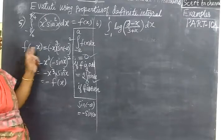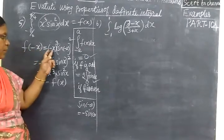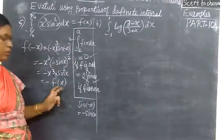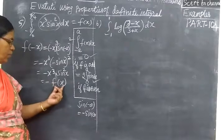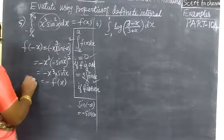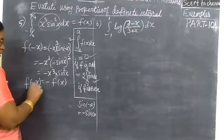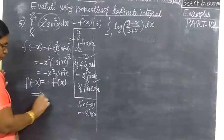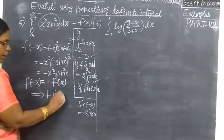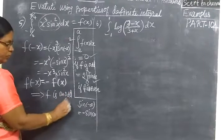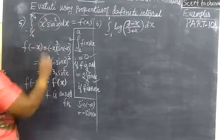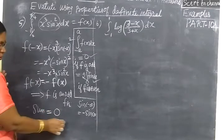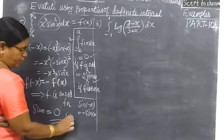So x cubed sin squared x, that is minus f(x). So f of minus x equals minus f(x), which implies f is an odd function. For an odd function, the definite integral given is equal to 0. This is written by property.